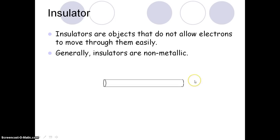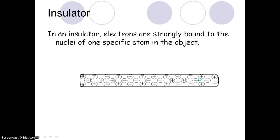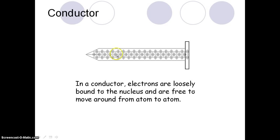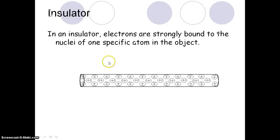Our insulators are generally non-metallic, so in this case we're using plastic. If you look at how the atoms are represented here, you'll notice that both the positive charge and the negative charge are very close to one another, unlike in the conductor where the negative charge is outside of the positive charge. This shows that the electrons are strongly bound to the nucleus, and it's very difficult for an electron in an insulator to move anywhere.